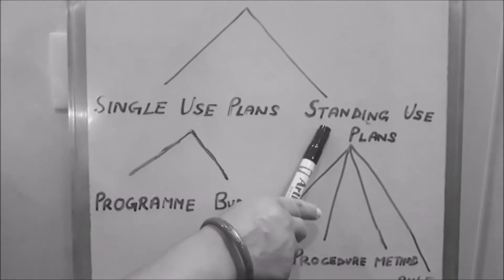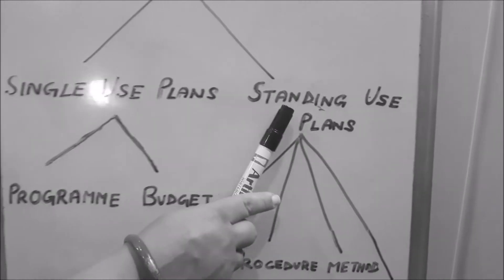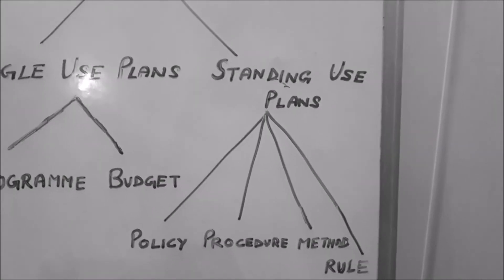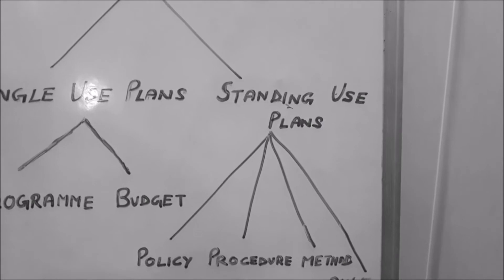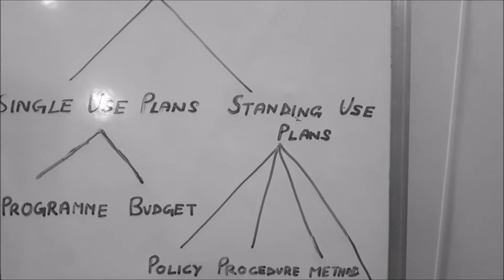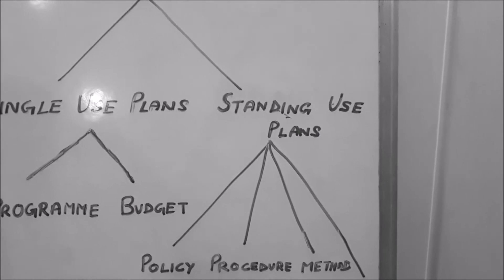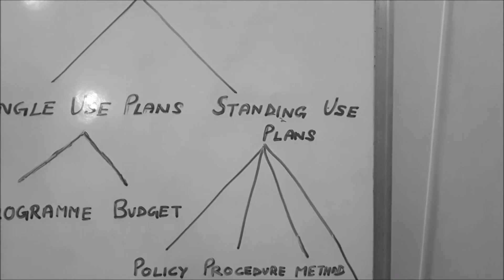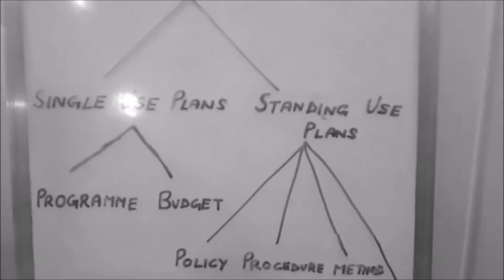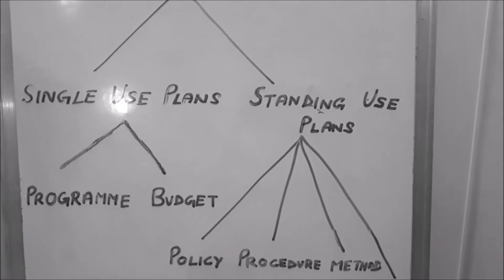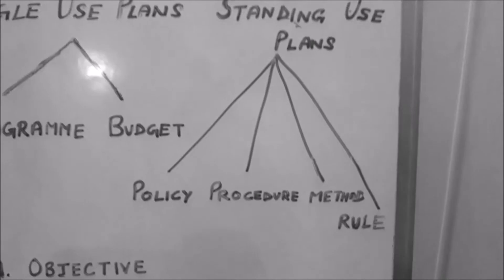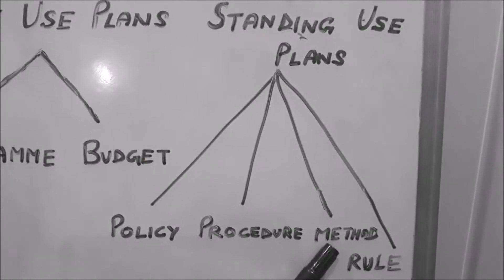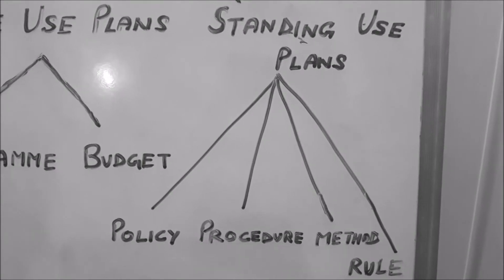The second type of plan is standing use plans. These are the plans which are developed for activities which occur regularly, so they can be utilized again and again. Standing use plans include four types: first is policy, second is procedure, third is method, and fourth is rule.